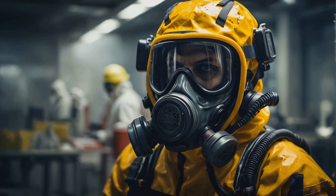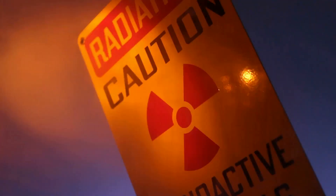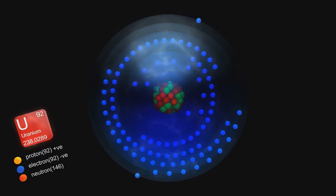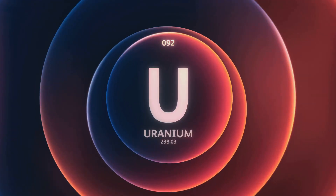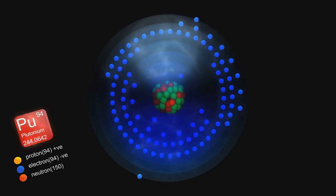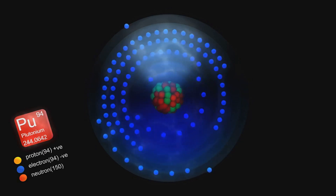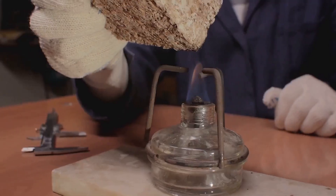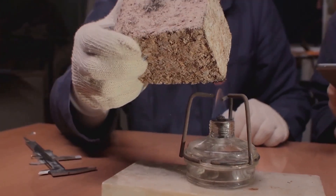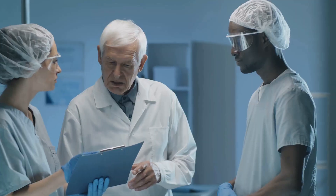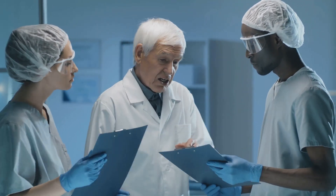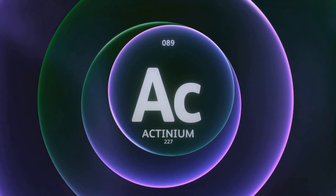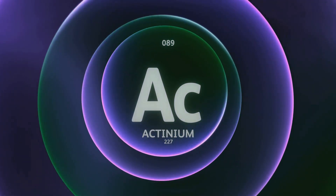Handling radioactive materials, especially uranium, requires serious precautions — the danger lies not in seeing the material, but in the invisible energy it releases. Uranium is radioactive because its atomic structure is inherently unstable. Among its isotopes, uranium-235 is particularly important: it's capable of undergoing nuclear fission even when struck by low-energy or thermal neutrons, making it the fuel used in nuclear reactors. Uranium-238, the more abundant isotope, can only be fissioned by high-energy neutrons, making it less efficient for energy production but still valuable.